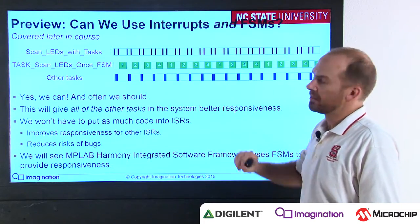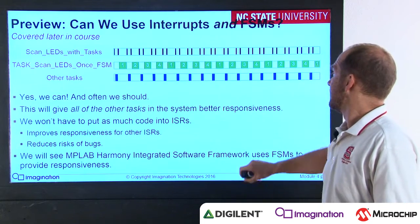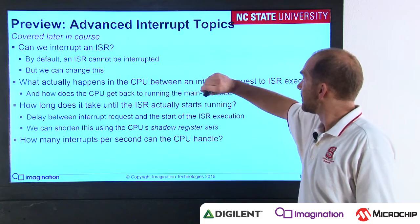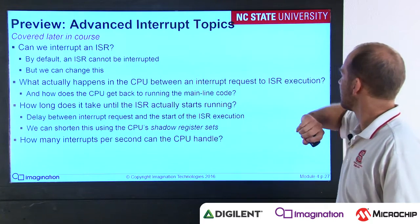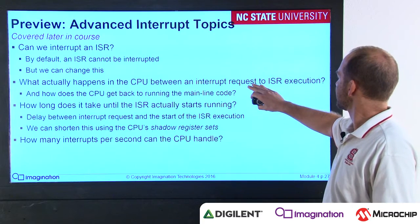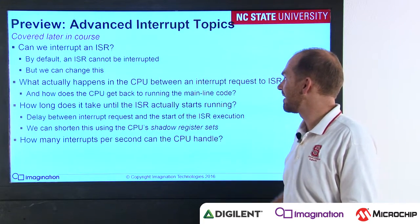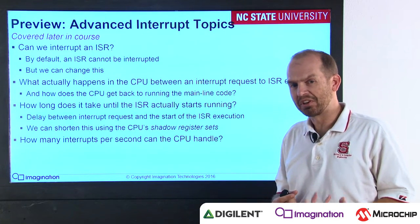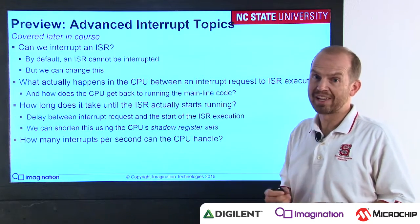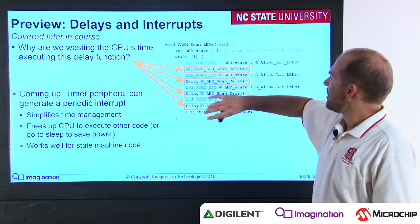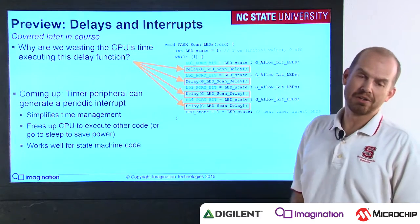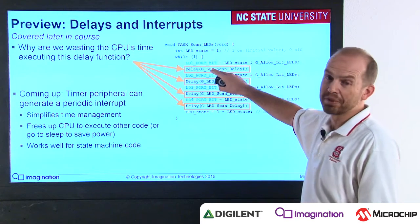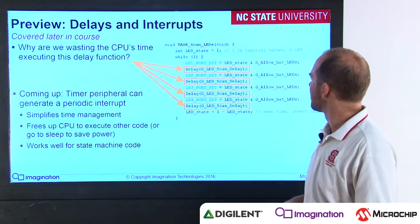Later in the course, we'll see how to use interrupts and finite state machines together for better performance. We will also talk about advanced interrupt topics such as whether we can interrupt an ISR, what actually happens in the CPU between an interrupt request and the ISR execution, how the CPU gets back, and how long it takes. This module number four introduces how interrupts help with concurrency. Later in the course, we get into what actually happens for the interrupt. We also look at how we can use timers to get rid of delay calls, so hardware peripherals can tell the processor when a certain amount of time has gone by, rather than forcing the processor to execute code waiting for time to pass.